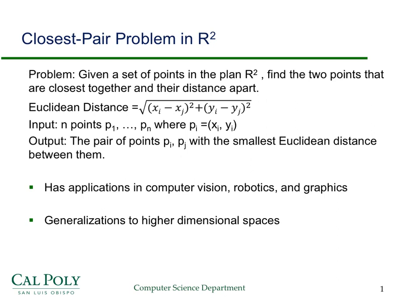You take the difference between the x-coordinates of the two points, square it, and add it to the difference of the y-coordinates squared, then take the square root. The input will be n points where we denote each point by its x-coordinate and y-coordinate, and the output will be the pair of points with the smallest Euclidean distance between them.